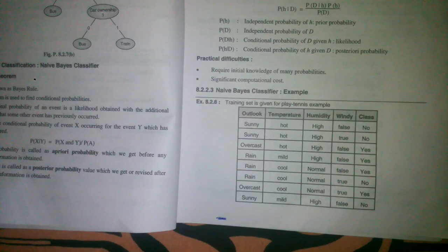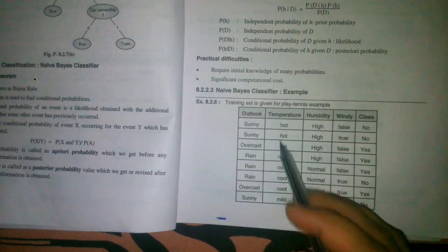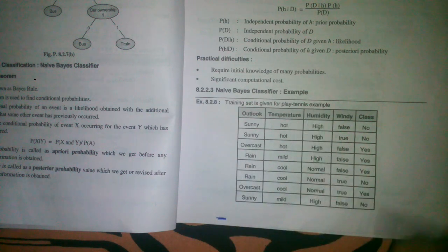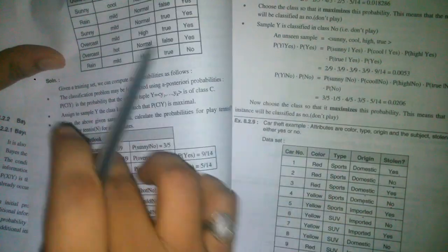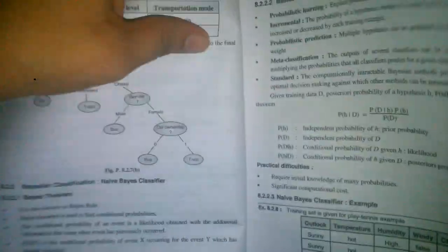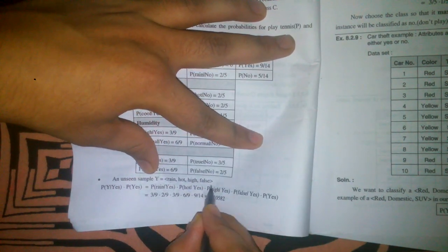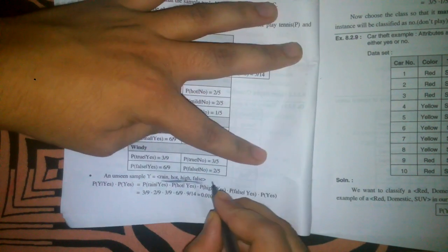Hello YouTube. This example is based on a Naive Bayes classifier. Suppose you're given a training set for 'play tennis' with certain data, and you need to predict the class for unseen samples.